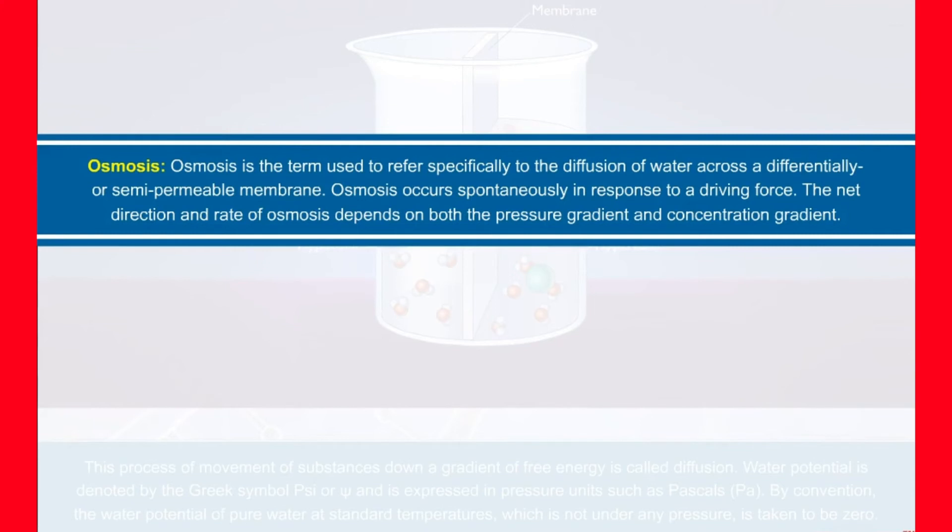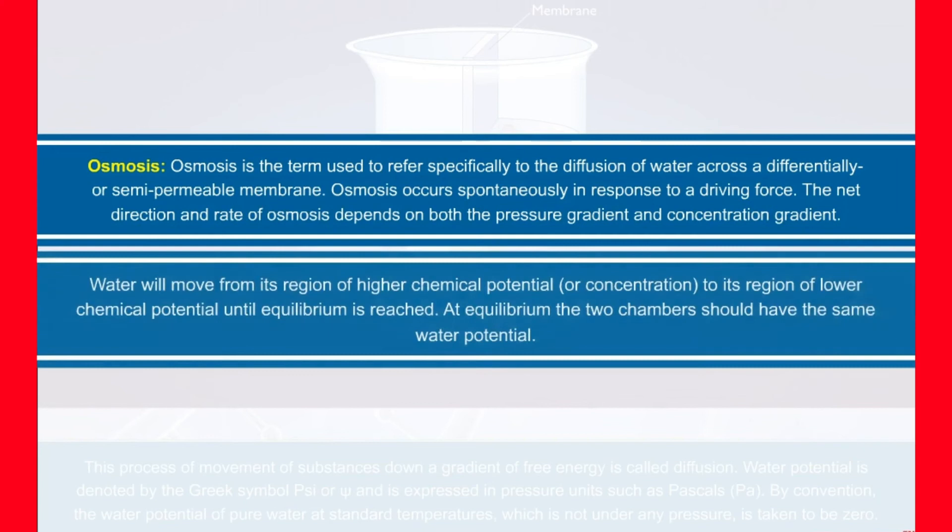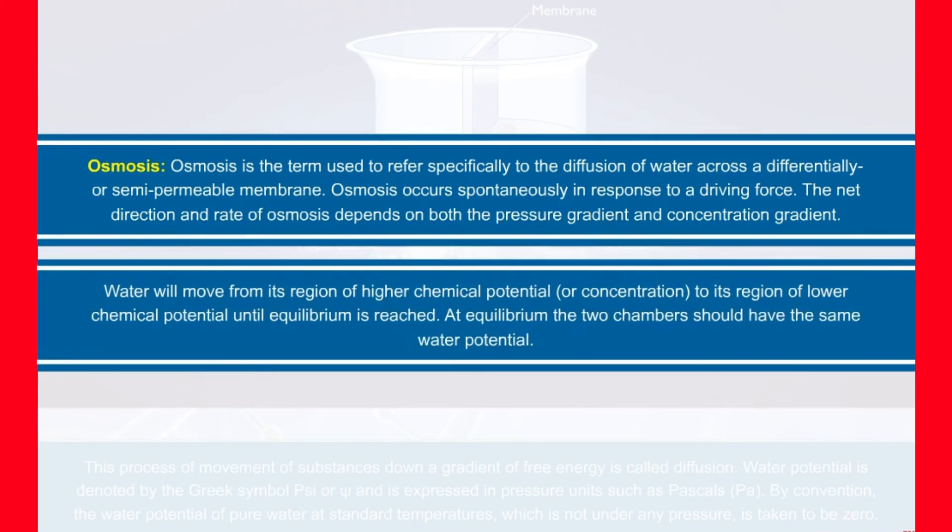ψw is the term used to refer specifically to the diffusion of water across a differentially or semi-permeable membrane. Osmosis occurs spontaneously in response to a driving force. The net direction and rate of osmosis depends on both the pressure gradient and concentration gradient. Water will move from its region of higher chemical potential or concentration to its region of lower chemical potential until equilibrium is reached. At equilibrium, the two chambers should have the same water potential.